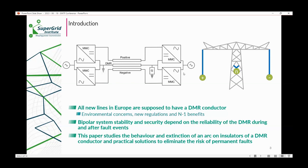It's important to say that in normal operation, positive negative pole currents are almost perfectly balanced, so the current through DMR is zero and voltage drop across the DMR is close to zero. But in case of a monopolar operation, the full current goes through DMR, so the voltage is equal to the voltage drop along the conductor. Bipolar system stability and security depends on the reliability of DMR during and after fault events, so in case of a fault on either of the poles, we need to keep DMR operational.